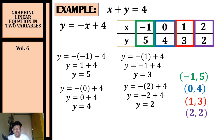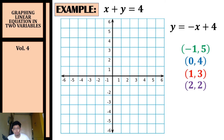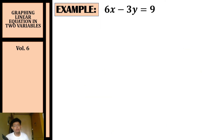Now that we have our coordinates, it's time to plot them in our rectangular coordinate system. We plot (−1, 5), (0, 4), (1, 3), and (2, 2), then connect the points with a line. That is the graph of x plus y equals four.